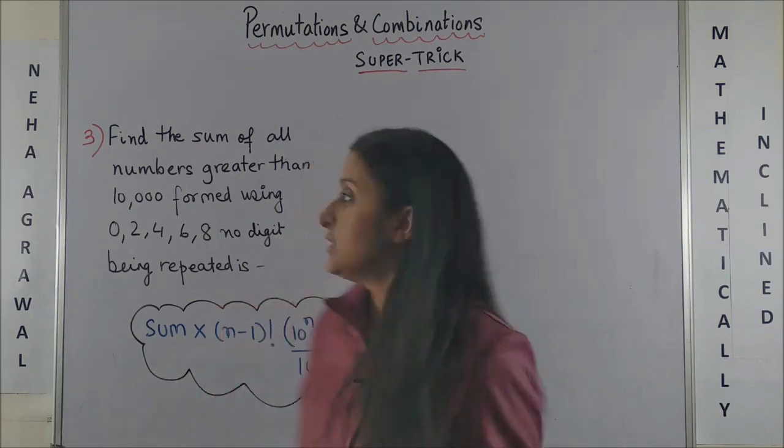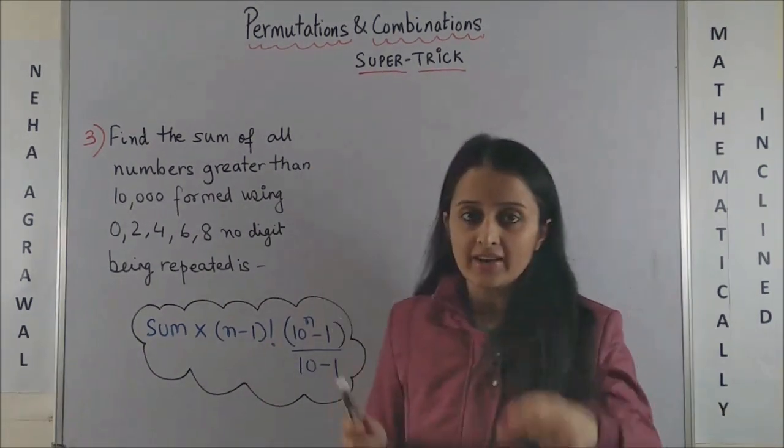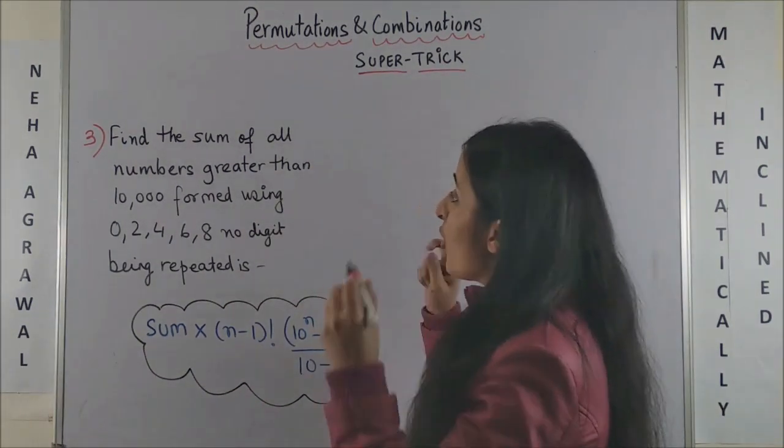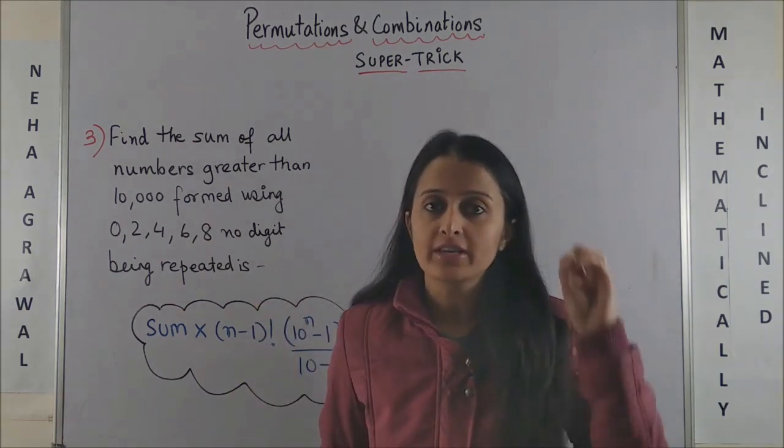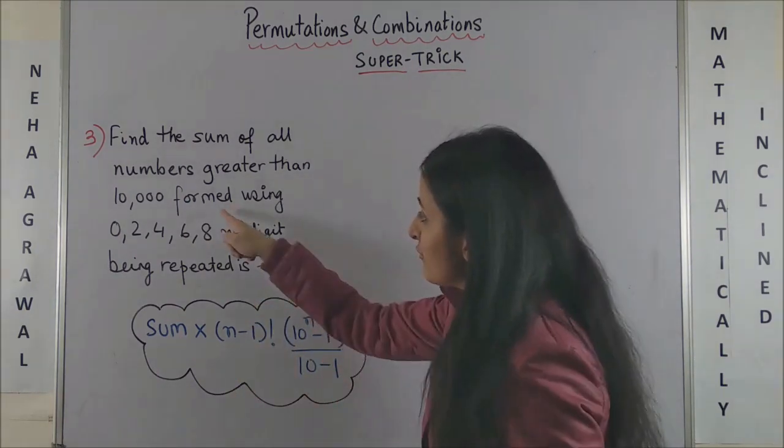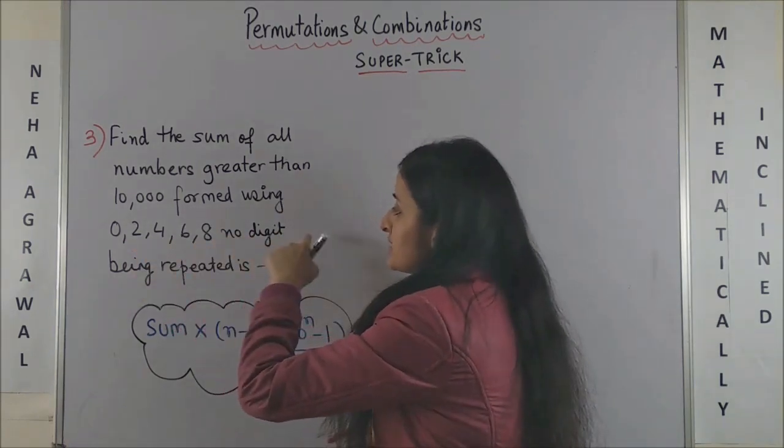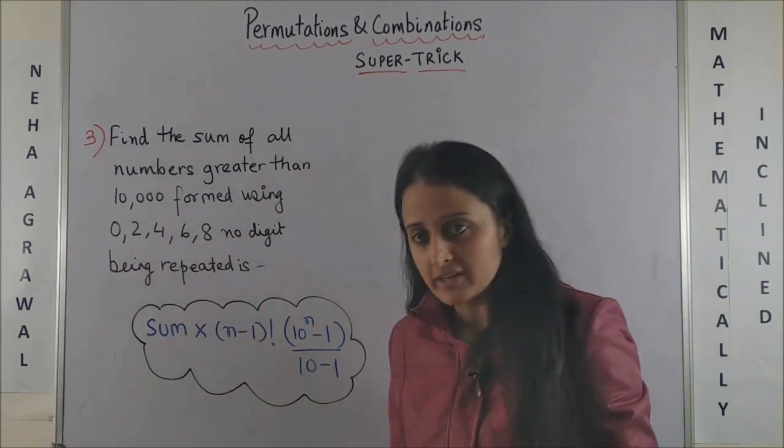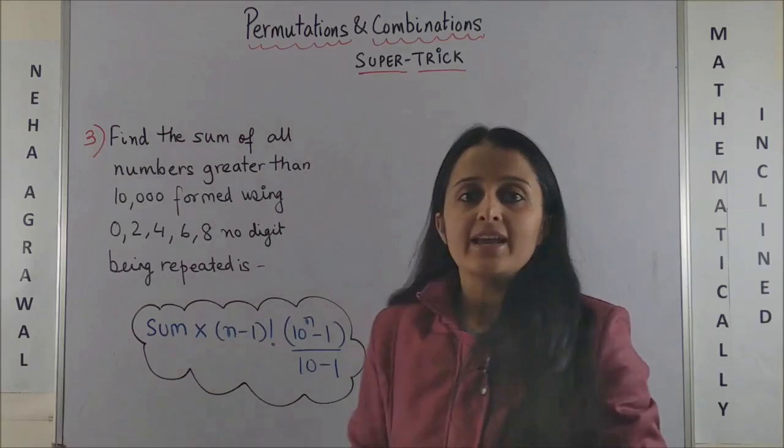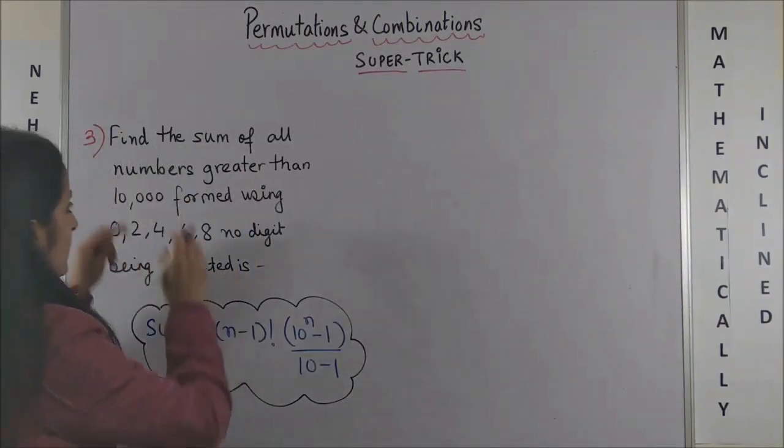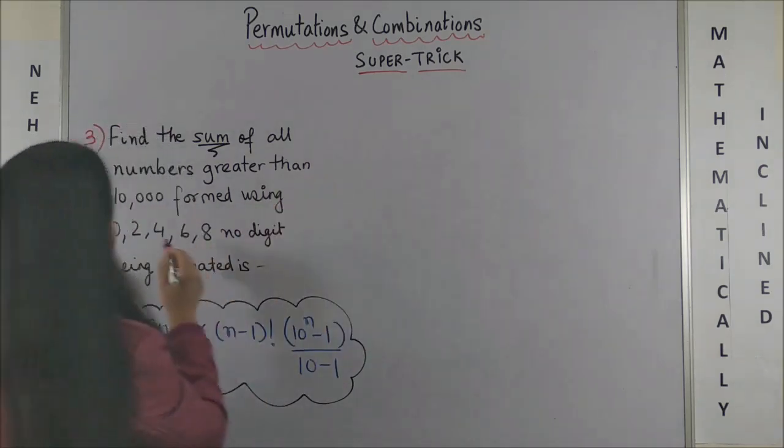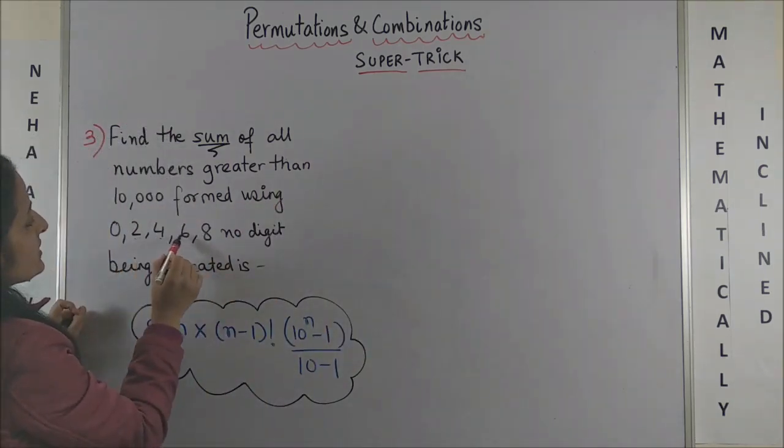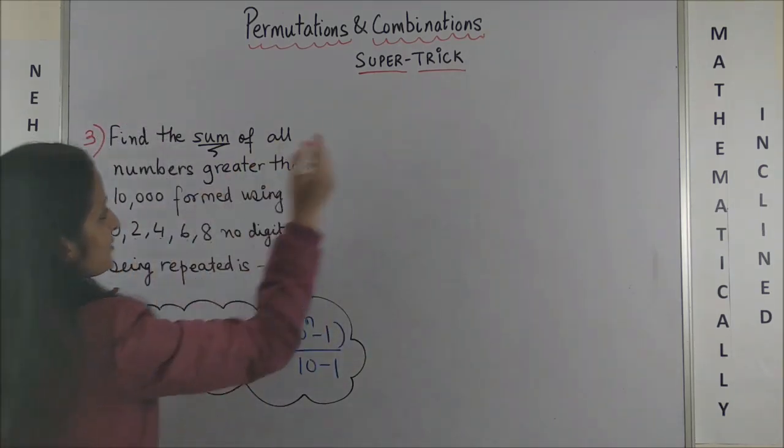Same way, look at the third question. Again, find the sum of all the digits greater than 10,000. So this time we are looking at a five-digit number formed using 0, 2, 4, 6, 8 where no digit is being repeated. So once again, to create a five-digit number whose sum is to be found, I use the formula. So sum of these is 2 plus 4 is 6, plus 6 is 12, plus 8 is 20, into n minus 1 that makes it 4 factorial. This is 10 raised to power 5 minus 1 upon 10 minus 1 which is 9.